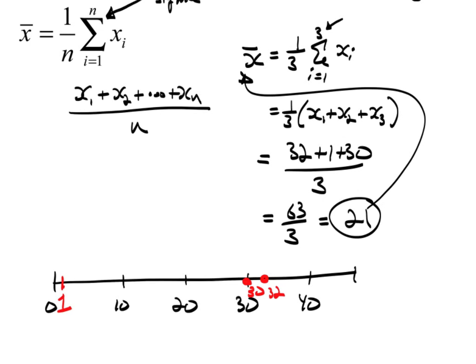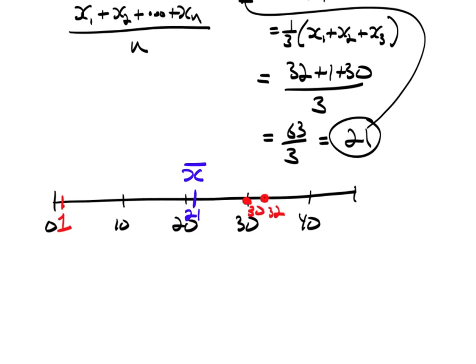And then the sample average we found to be right here at 21. This is X bar. So what we're claiming is that numerically this is a balancing point. Well, what does it mean to be a balancing point?